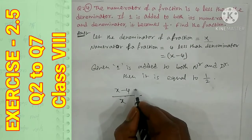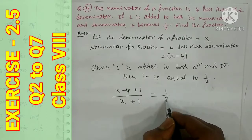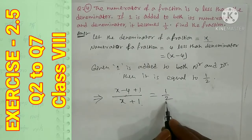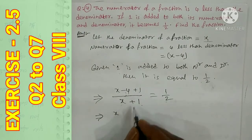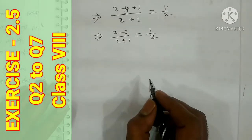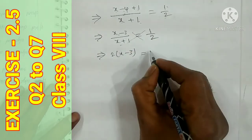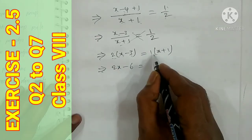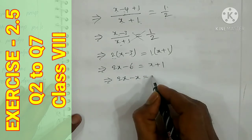Both numerator and denominator are added with 1. So: (x minus 4 plus 1) over (x plus 1) equals 1/2, which gives (x minus 3) over (x plus 1) equals 1/2. By cross multiplication: 2 into (x minus 3) equals 1 into (x plus 1), so 2x minus 6 = x plus 1. Taking x to the left side and 6 to the right: 2x minus x = 6 plus 1.